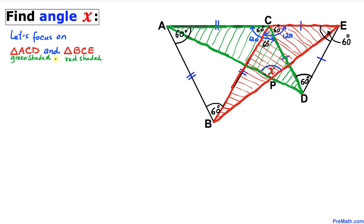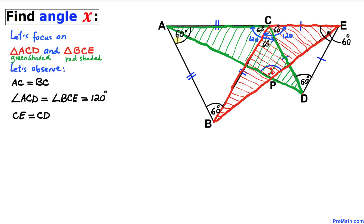In our next step, let's focus on triangles ACD and BCE. Triangle ACD is shaded green and triangle BCE is shaded red. Side AC equals side BC, angle ACD equals angle BCE and both are 120 degrees each, and moreover side CE equals side CD.